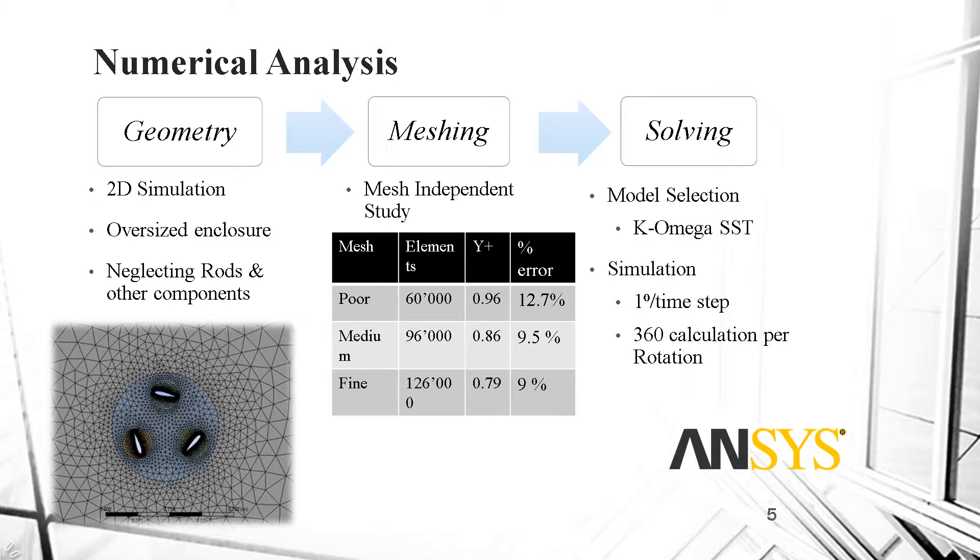The model on which the calculations were supposed to be done was chosen when imitating an existing turbine in one of the reliable articles, and where it turned out that K-Omega SST gives the closest results. The calculations were done on the basis of 360 calculations per rotation, which means 1 degree per time step.